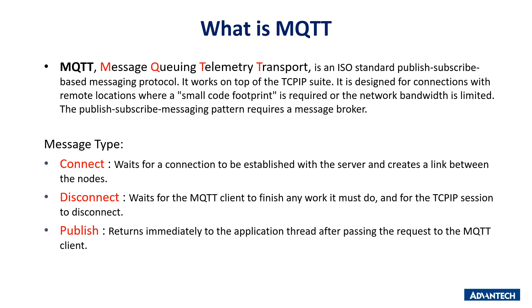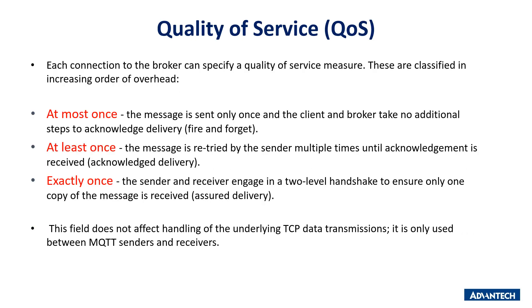MQTT. Each connection to the broker can specify a quality of service level. These are classified in increasing order of overhead: 'At most once' — the message is sent only once with no acknowledgement, fire and forget. 'At least once' — the message is retried by the sender multiple times until acknowledgement is received. 'Exactly once' — the sender and receiver engage in a two-level handshake to ensure only one copy of the message is received, assured delivery.